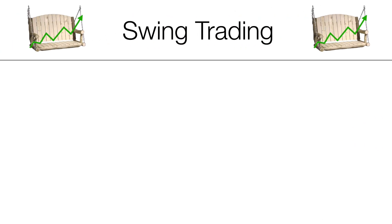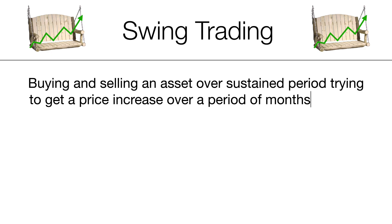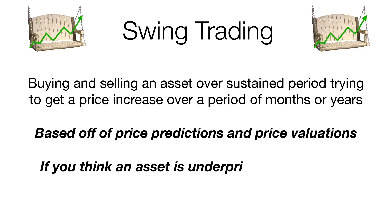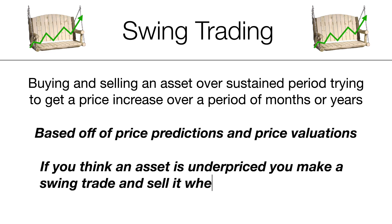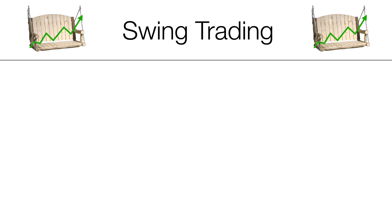Now let's go on to swing trading. Swing trading is when you buy and sell an asset over a sustained period where you try to get a price increase over a period of months or years. This is more based off price predictions and price valuations. So if you think that an asset is severely underpriced, you make a swing trade and sell it when you think the price reflects the true valuation. Let's look at an example.